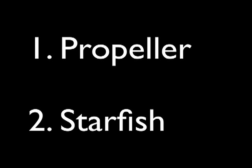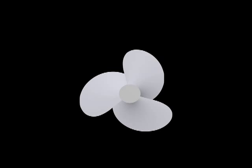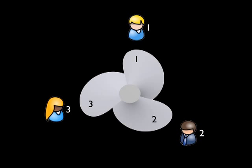We'll learn through two examples. Our first will be an easy one, this propeller. It looks the same from three different points of view. Person number one looks at blade number one, person number two at number two, and person number three looks at blade number three.